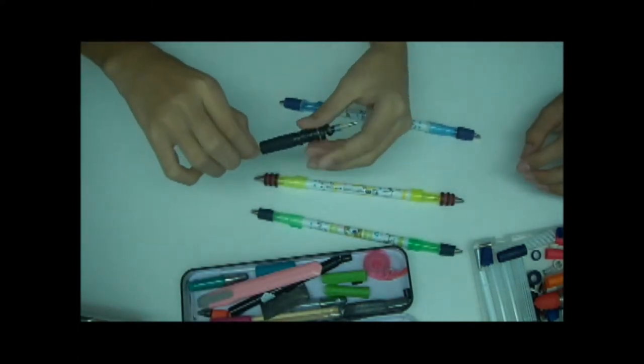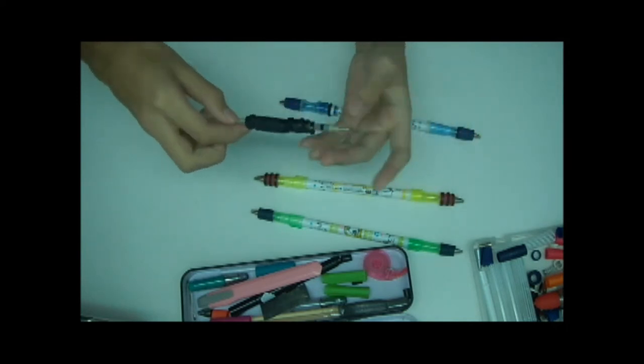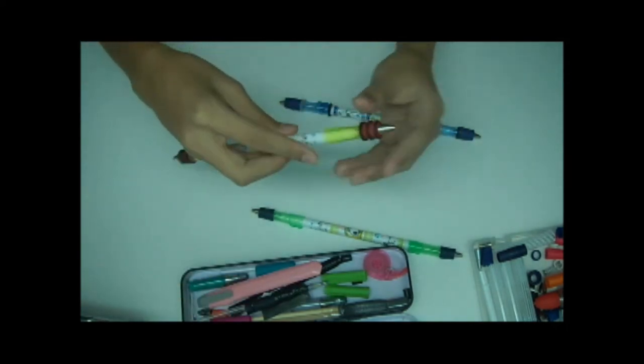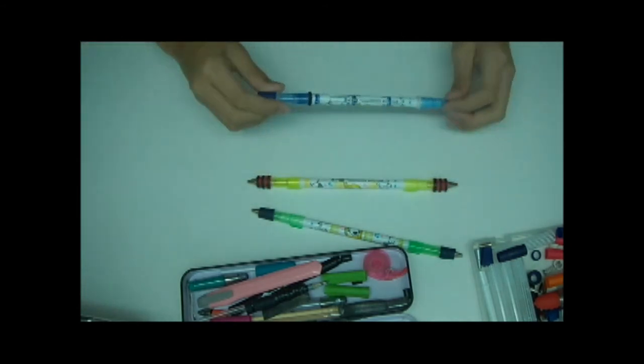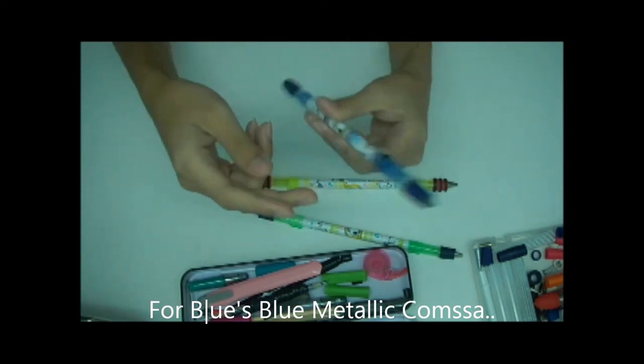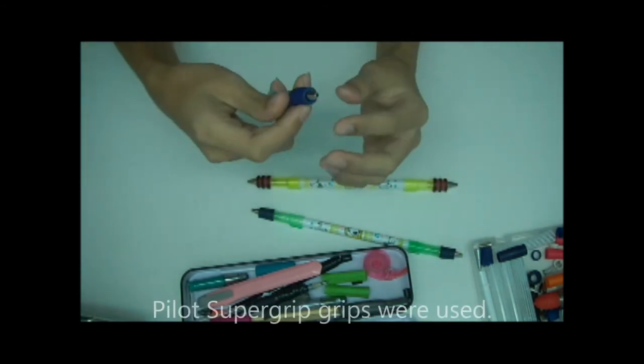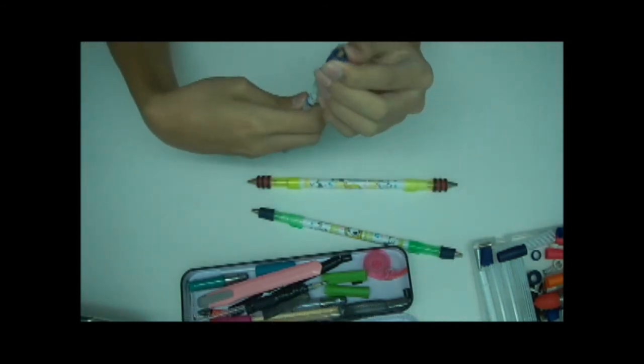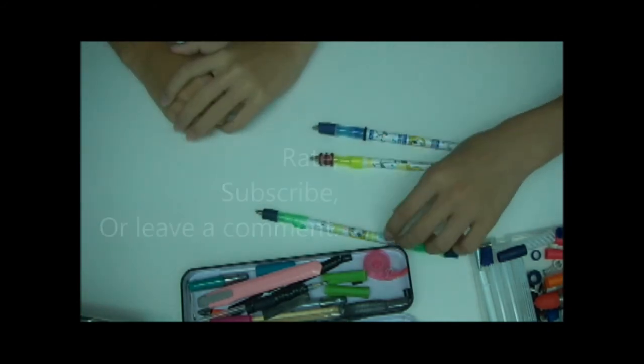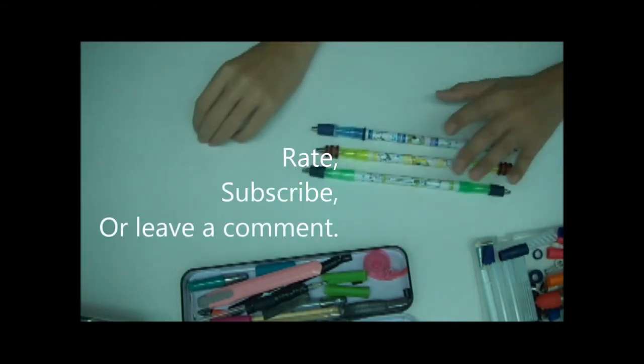What I did was I got many sections from some grip and made rings around here like that. You don't always have to use Signal grips; for Blue's metallic Commsar, he used Super Grip grips.